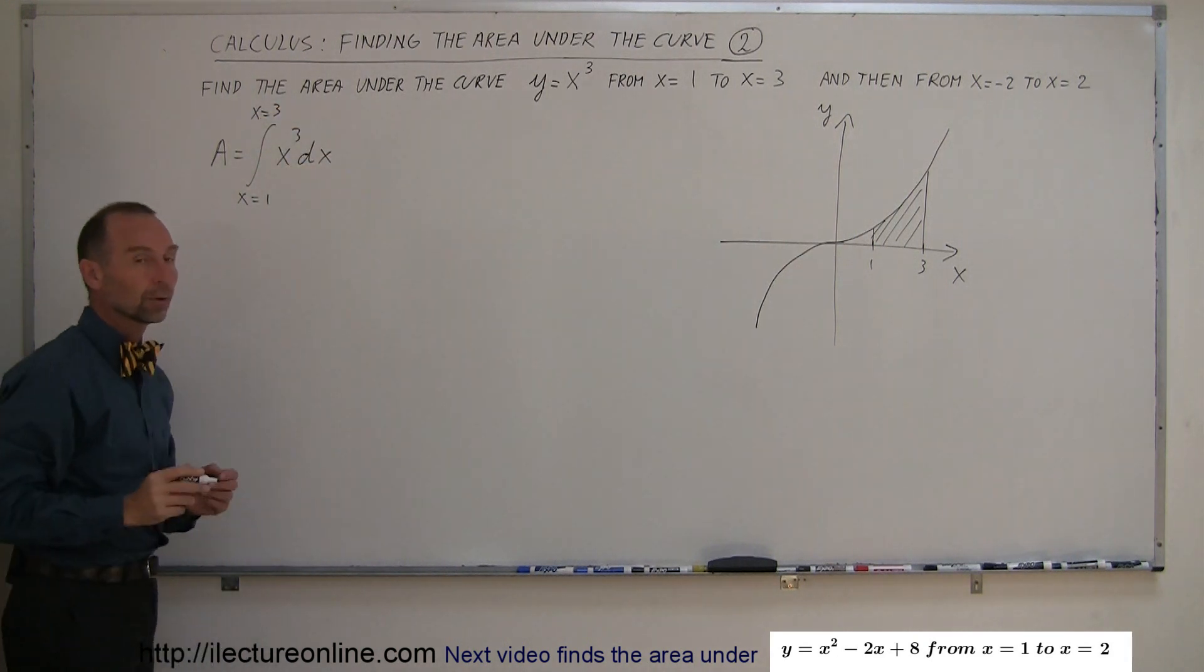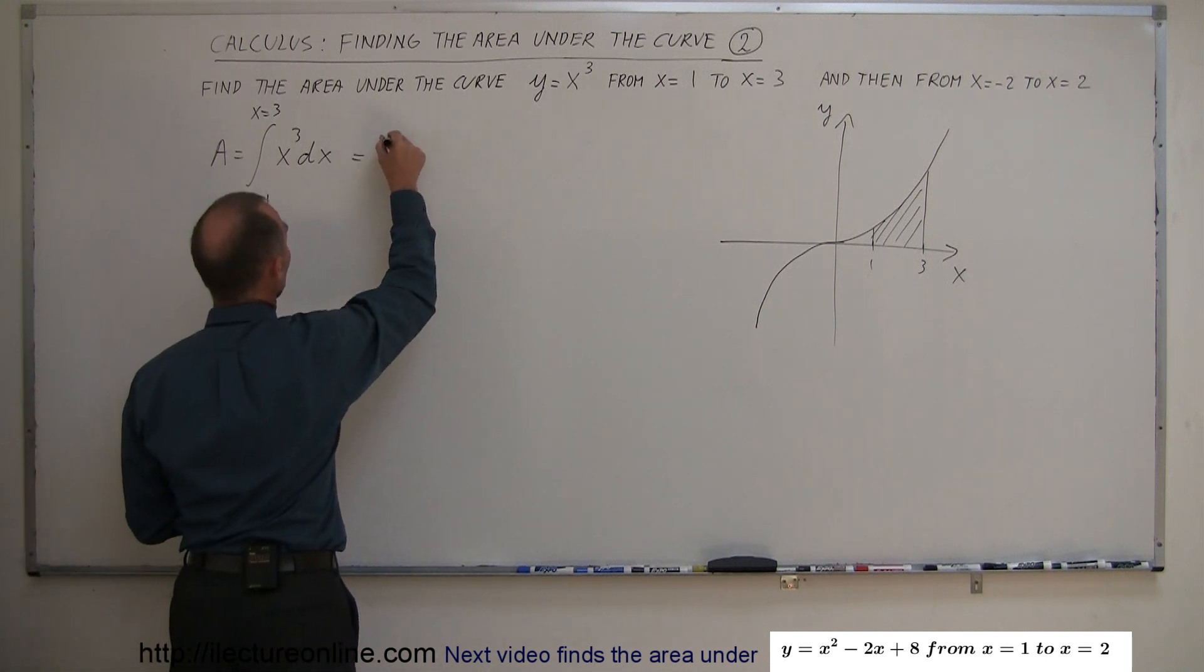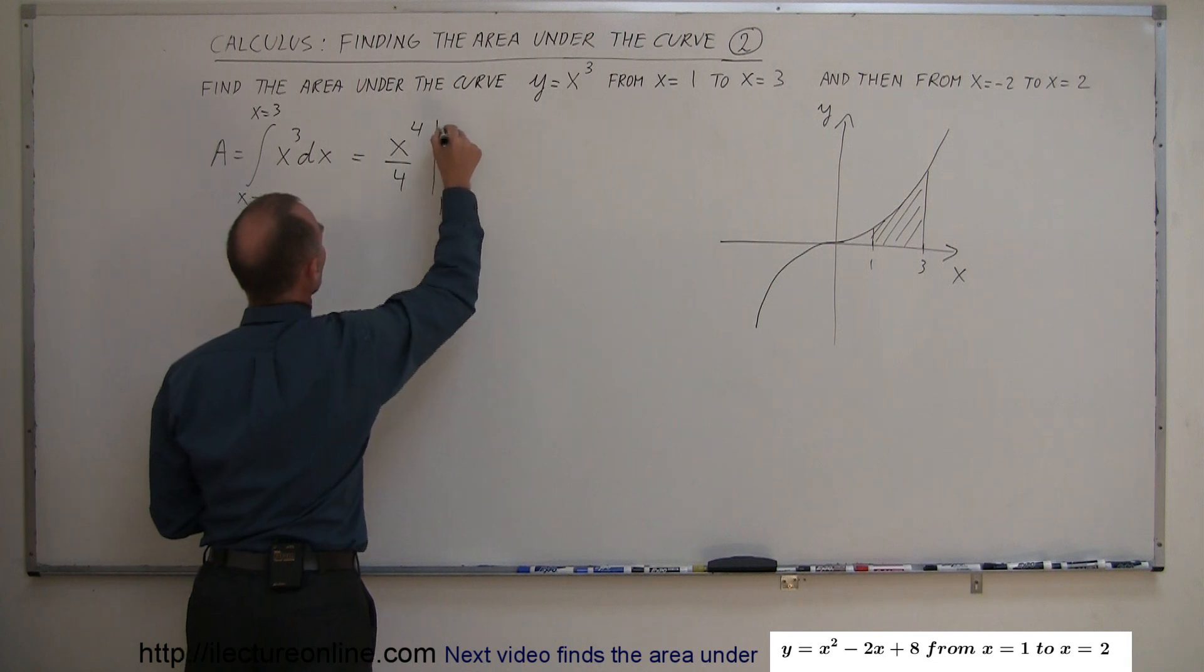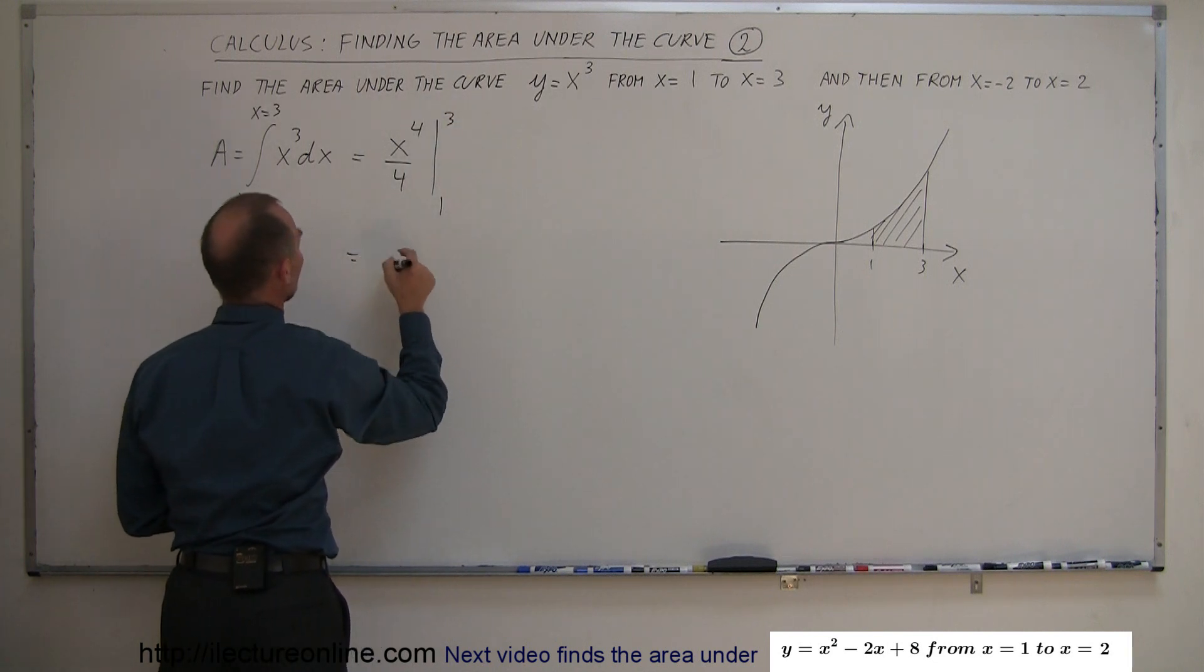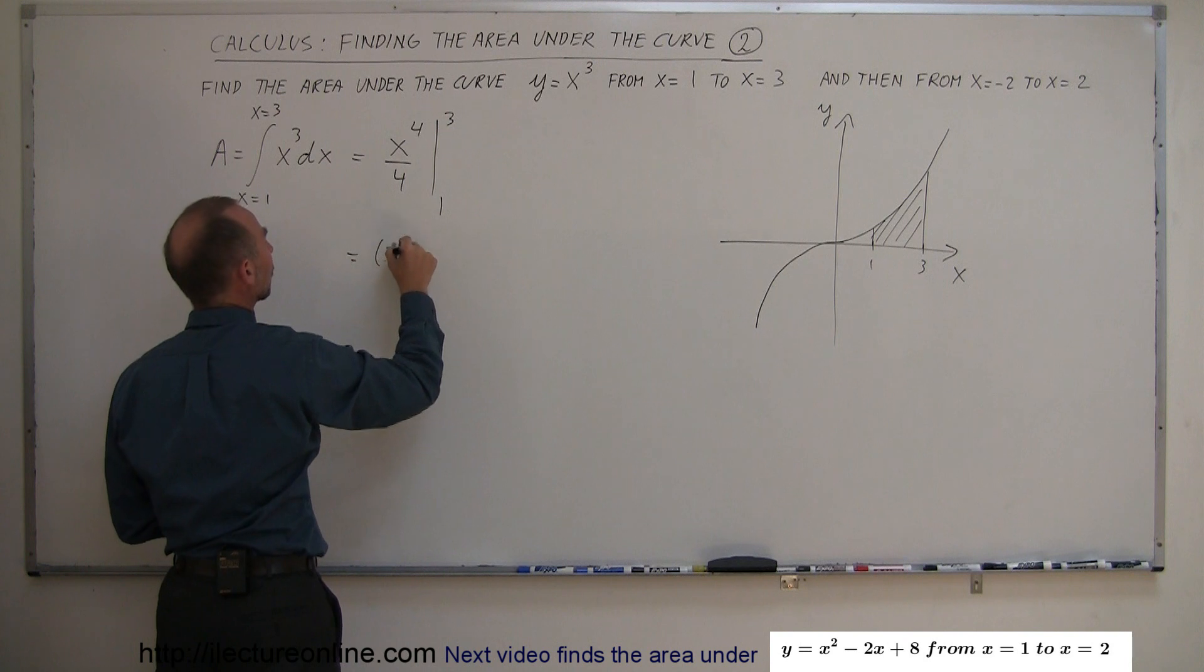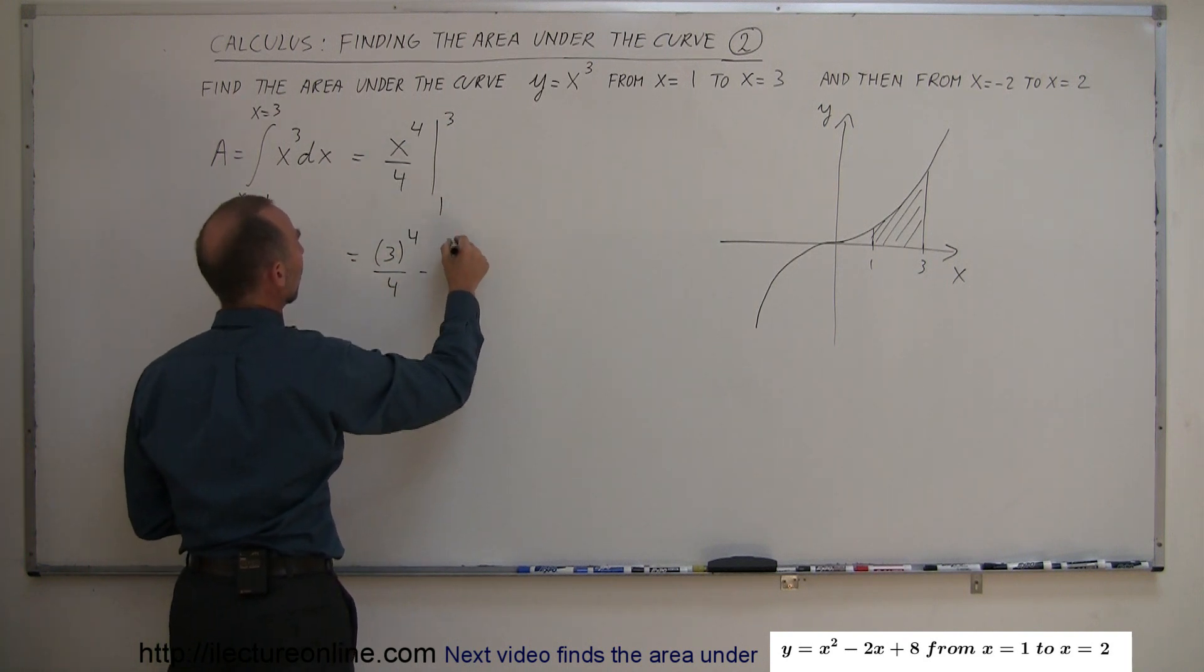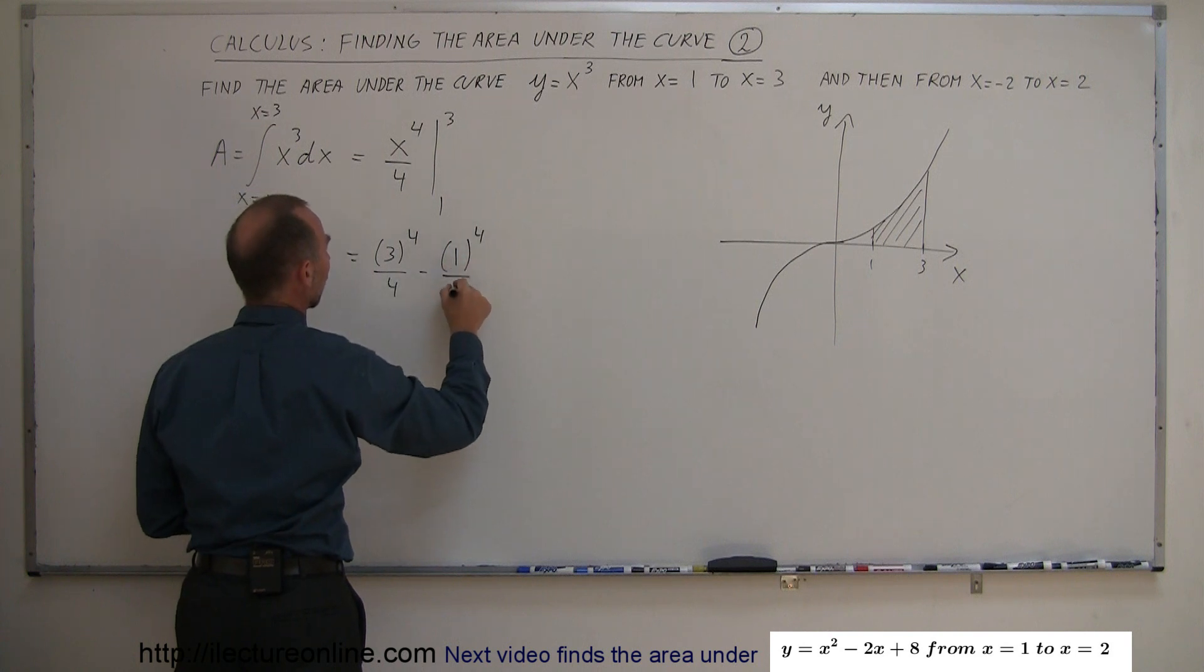The integral of that is straightforward. That is equal to x to the 4th over 4. We have to evaluate it from 1 to 3, which means this is equal to 3 to the 4th power over 4 minus 1 to the 4th power over 4.